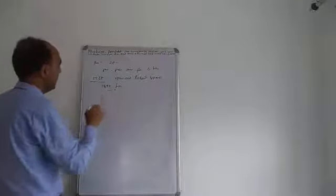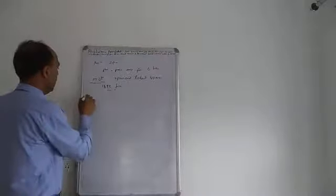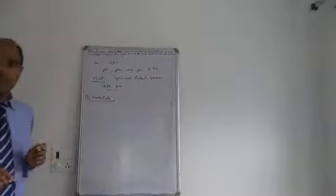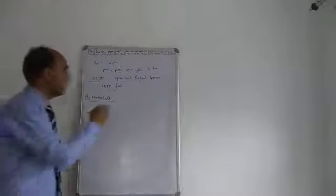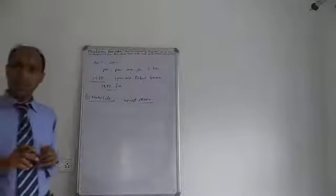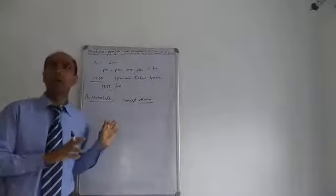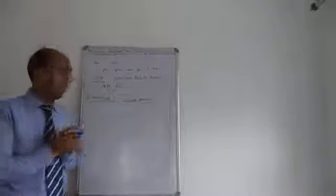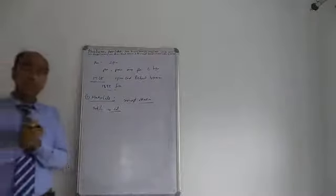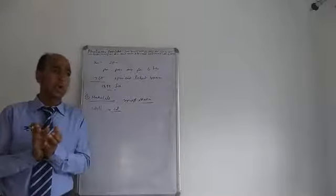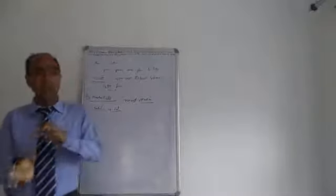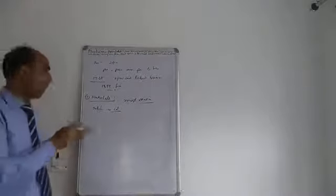First is habitat - what is their living place? The sponges are mostly marine, mostly marine organisms. Few are freshwater, for example Spongilla. They are solitary or colonial. Colonial means they live in groups and are gregarious, like Sycon.